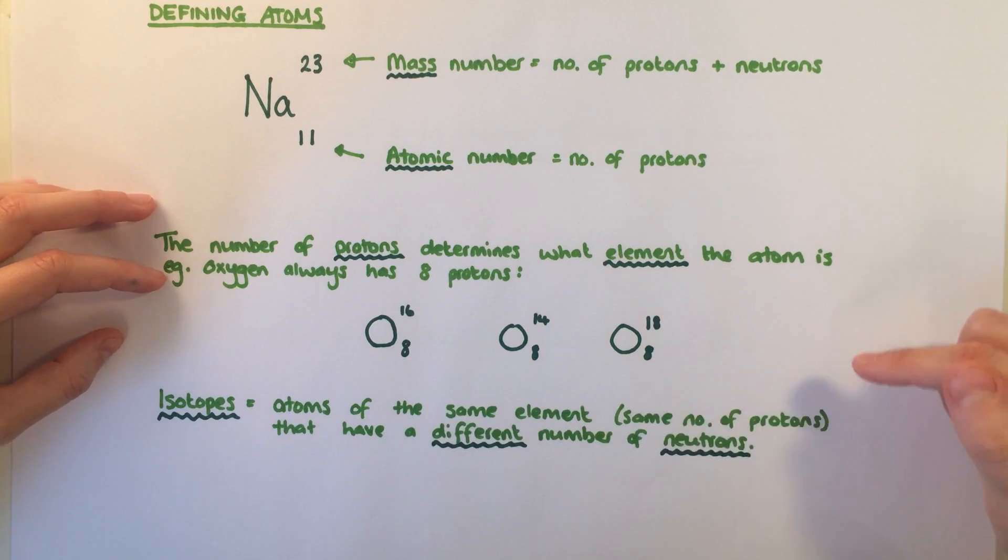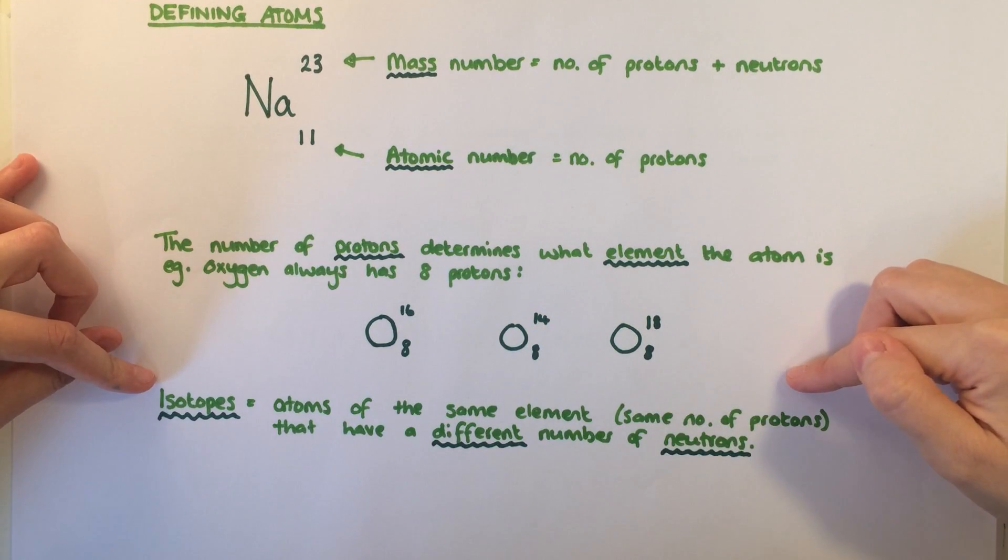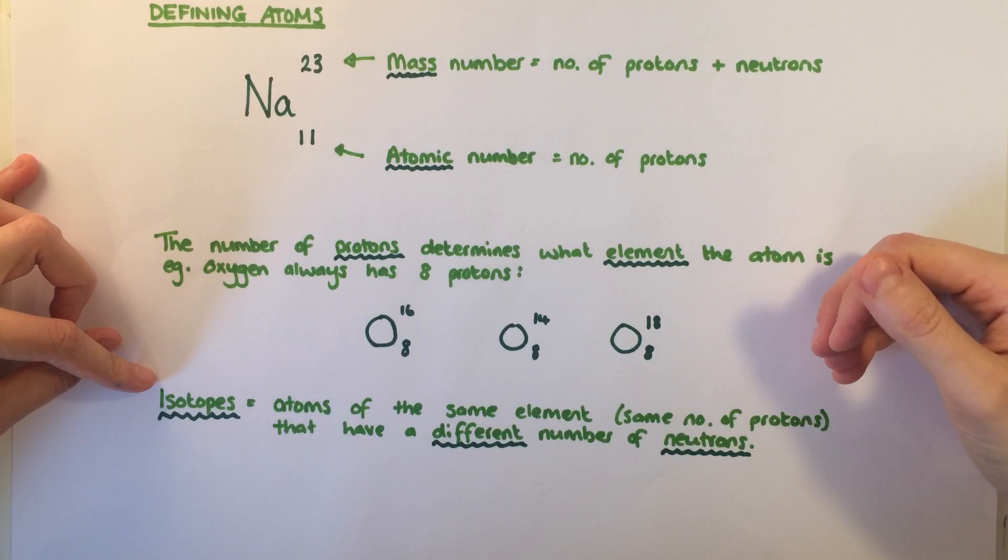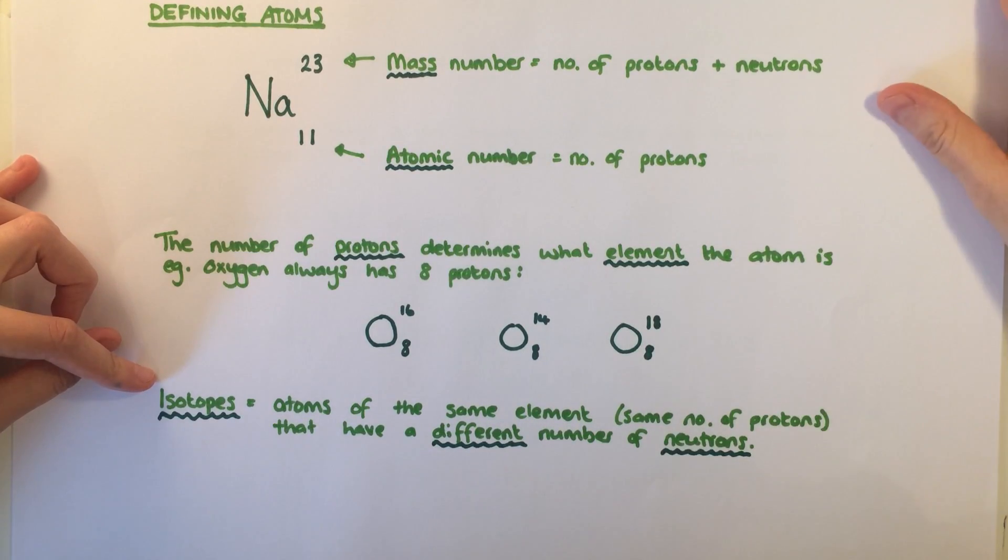However, there can be different versions of an element that have the same number of protons but a different number of neutrons. These are known as isotopes. Here we have some different isotopes of oxygen: oxygen 16, oxygen 14, and oxygen 18.